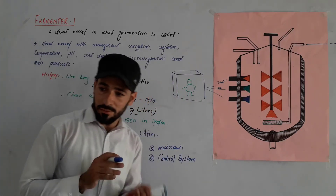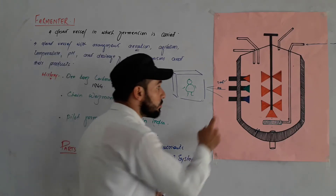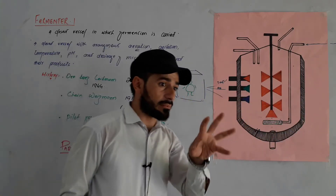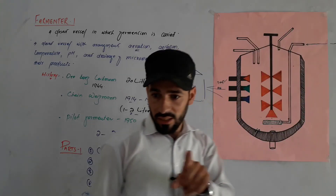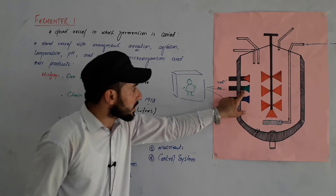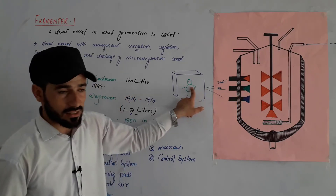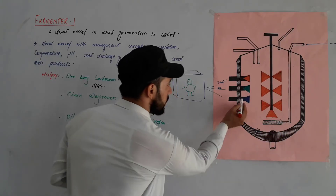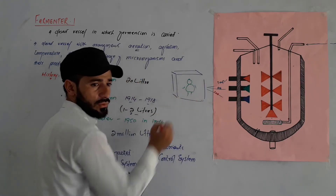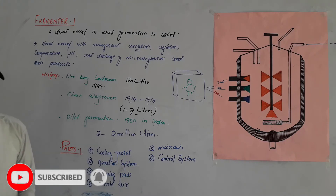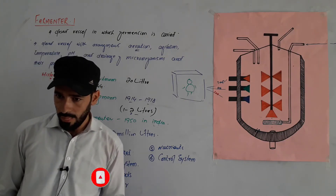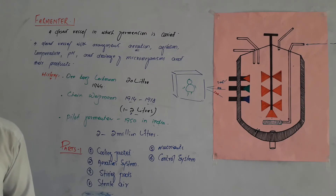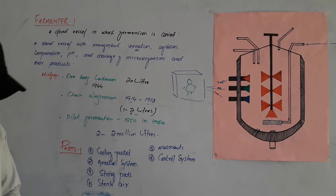pH control is also managed through sensors. The sensor monitors whether the medium is acidic or basic. If the medium is too acidic, acid is reduced or a basic medium is added, and vice versa. The CO2 concentration sensor also monitors carbon dioxide levels and signals the computer if CO2 is too high, prompting more air to be supplied.